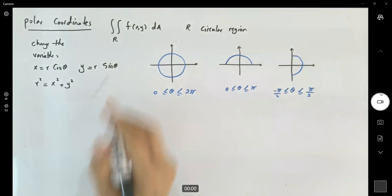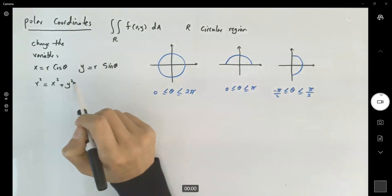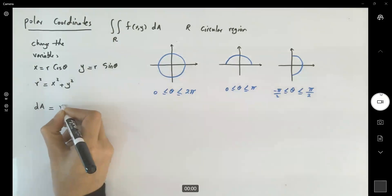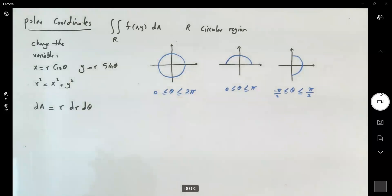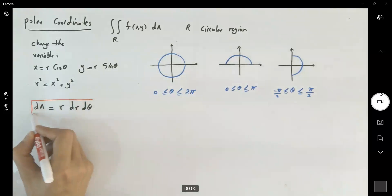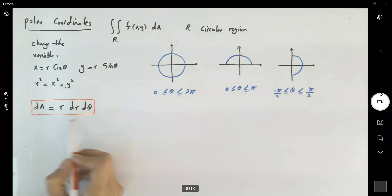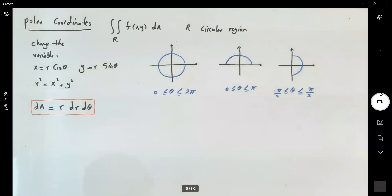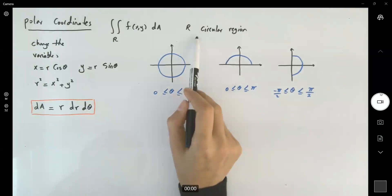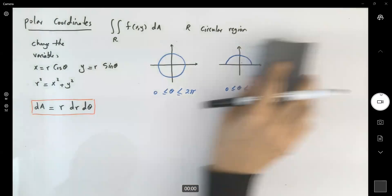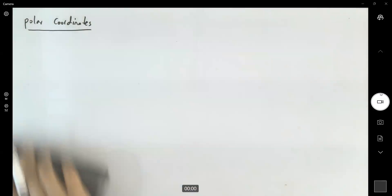So depending on the region you're working with, you have changes in theta and also in r. When you're converting your variables into polar form, you're going to make some adjustments to dA. In that case, dA becomes r dr dθ. This is an important note — students often forget to add r when they change dx dy from rectangular coordinates into polar coordinates.